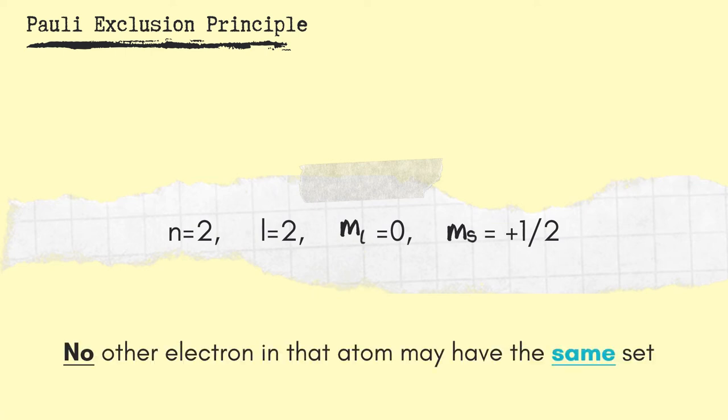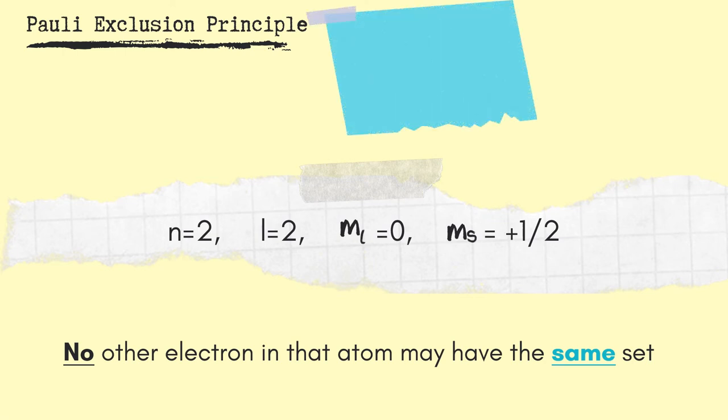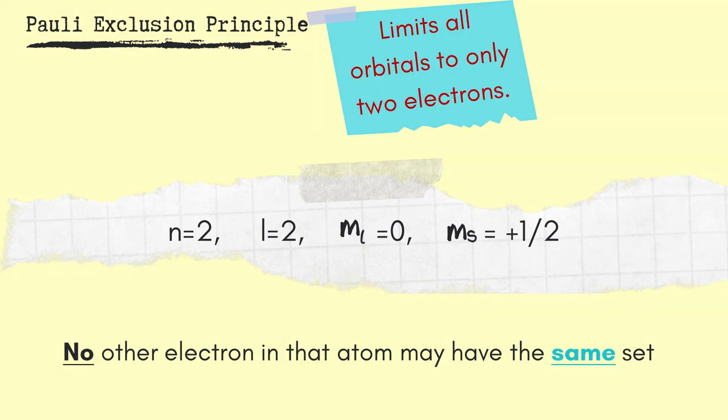For example, if an electron has the following set of quantum numbers, N is equal to 2, L is equal to 1, M sub L is equal to 0, and M sub S is equal to positive 1 half, then no other electron in that atom may have the same set. Therefore, we can say that the Pauli exclusion principle limits all orbitals to only two electrons.